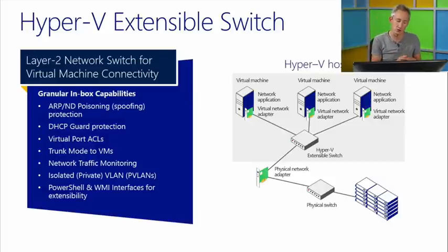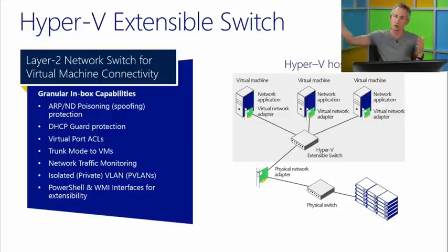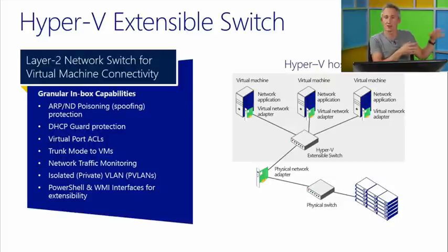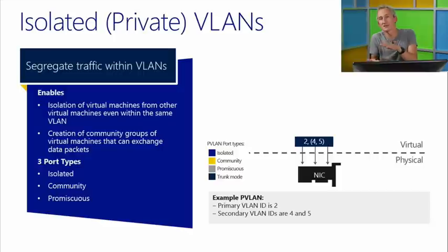We also have the capability of PVLANs — private VLANs. VLANs segregate traffic by tagging each packet with a VLAN ID, and the corresponding VM needs that VLAN ID on its virtual network adapter to receive that traffic. VLANs are typically difficult to scale in large environments — the technical limit is 4,095, not all switches support more than 1,000. But if you've got VLANs implemented and need more granularity within them, that's where PVLANs can help — they're a level of isolation within the VLAN.